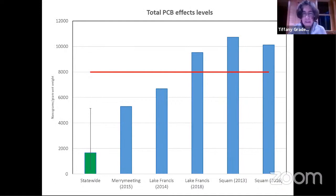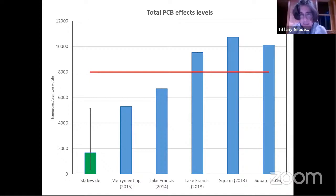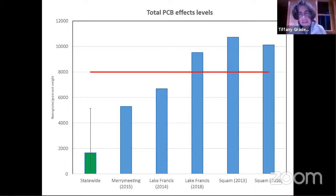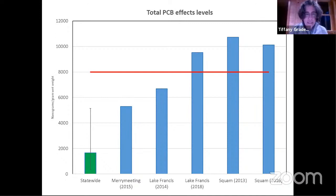Effect levels for total PCBs appear on the red line. Eggs from Lake Francis and Squam exceed those effects levels. When testing for dioxin-like PCBs — which requires a separate, expensive test — we've only tested a subset of eggs. We tested some statewide eggs, the Mary Meeting egg, and one each from Lake Francis and Squam.